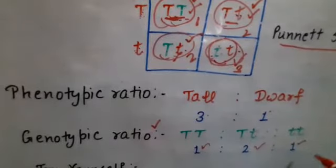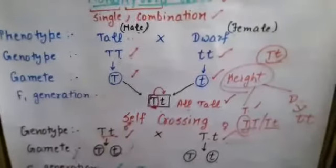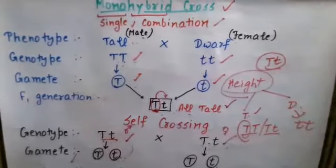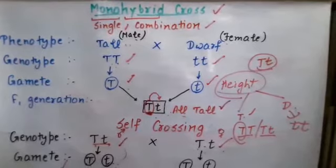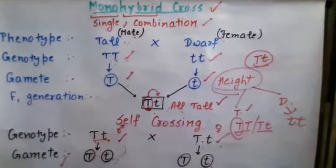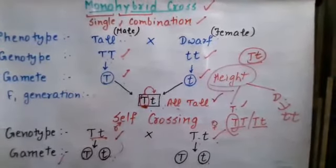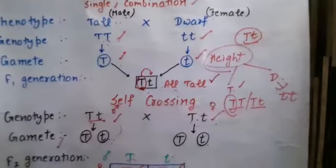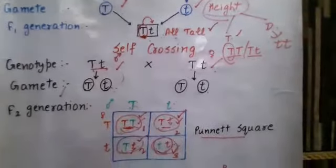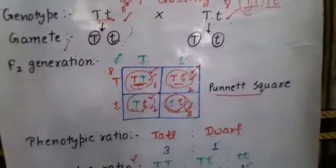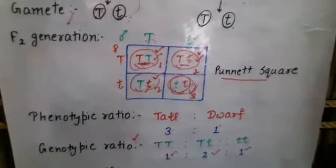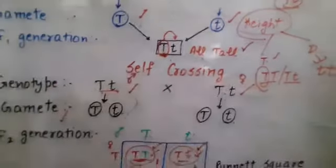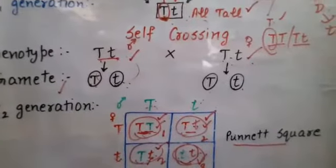Now let's look at the cross one more time. We had two phenotypes — tall and dwarf — with genotypes TT and tt. Gametes T and t get fused and we get Tt, all tall. Then self-crossing gives us the Punnett square, and at the end we calculate the phenotypic ratio and genotypic ratio. Two types of generations are there: the first is F1 generation and the second is F2 generation.